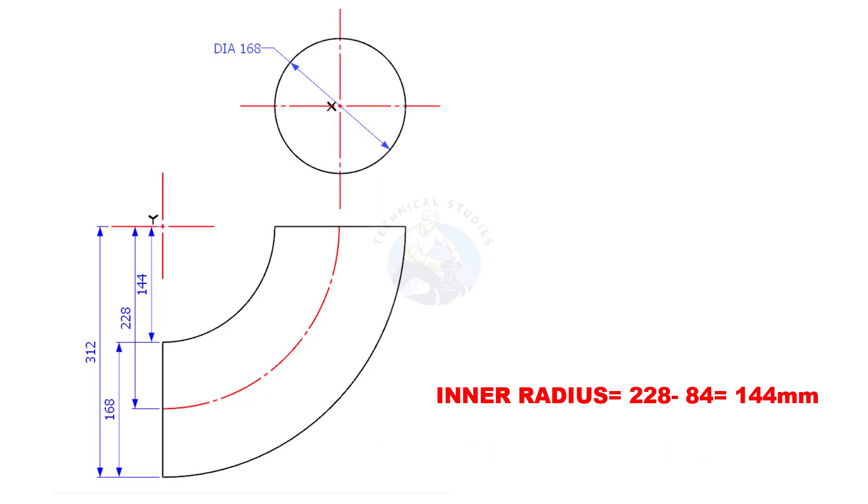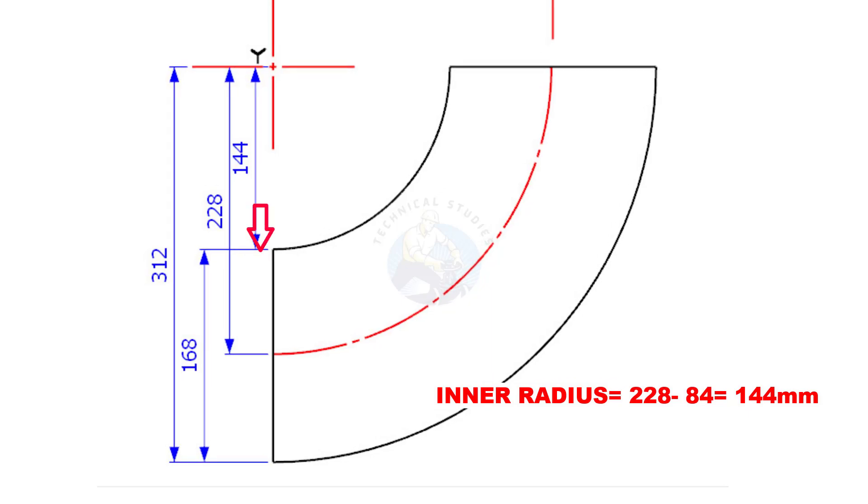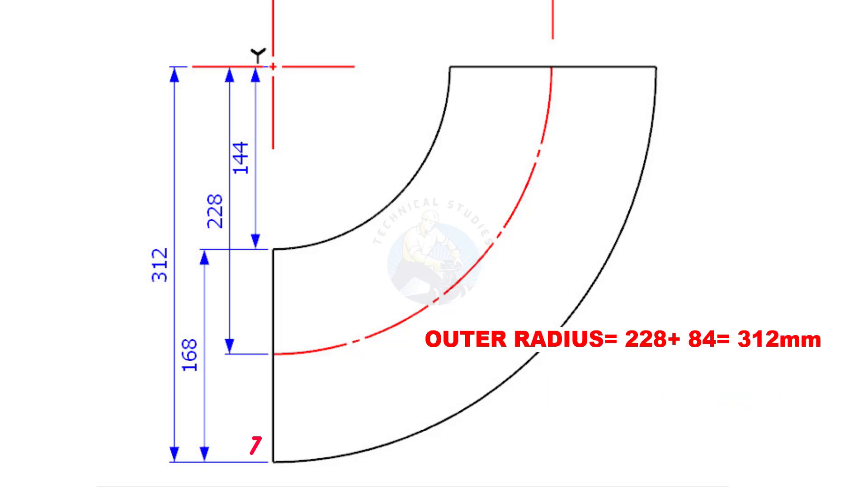To find the inner radius, subtract half of the diameter of the pipe, that is 84 millimeters, from the center radius. Outer radius is 228 plus 84, is equal to 312 millimeters.